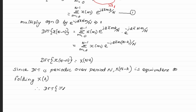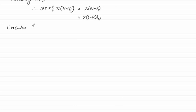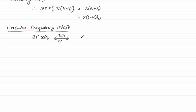Therefore, the DFT of x(N-n) is equal to X(N-k), which proves the time reversal property. Next property: if x(n) has N-point DFT equal to X(k), then x(n) times e to the power j 2π l·n/N, when taking N-point DFT, is equal to X(k-l) modulo N — that is, it is circularly frequency shifted.